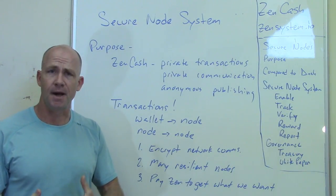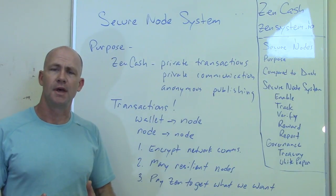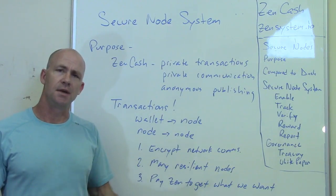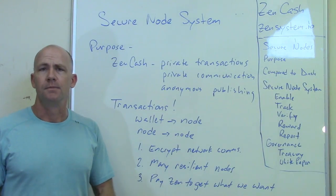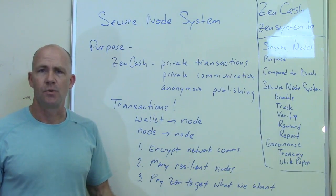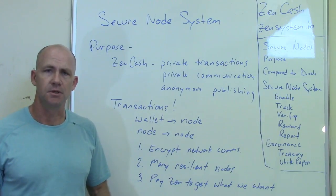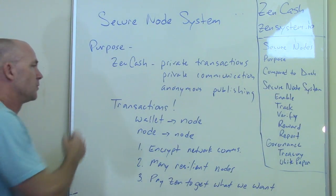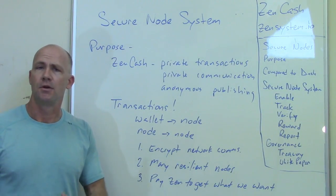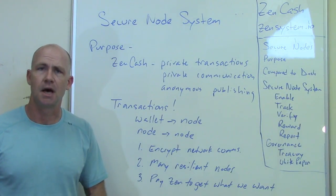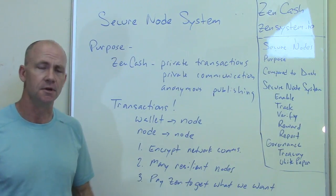That goes back to the purpose of it. Now, how are we going to make sure that these things stay private? It goes back to how ZenCash and blockchain cryptocurrencies work — it's done with transactions. The transactions start out at a wallet. Right now, the wallets are running on a desktop, but we'll also have mobile wallets and other types of wallets in the future.